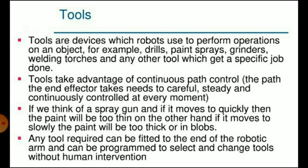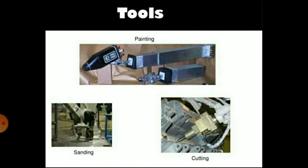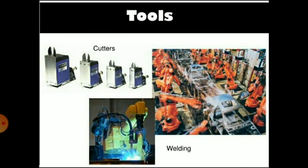Tools take advantage of continuous path control. For example, if a spray gun moves too quickly, the paint will be too thin; if it moves too slowly, the paint will be too thick or uneven. This tool can be fitted to the end of the robotic arm and programmed to select and change tools without human intervention. Tools are used for painting, sanding, cutting, welding, and cutting operations.